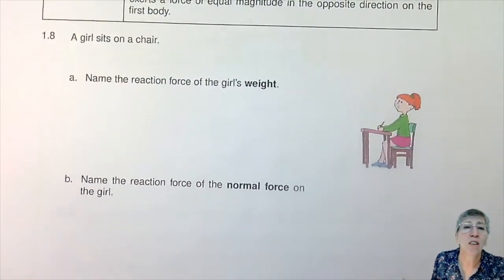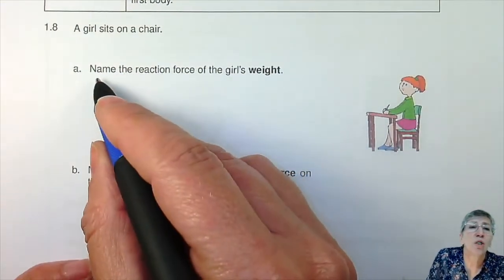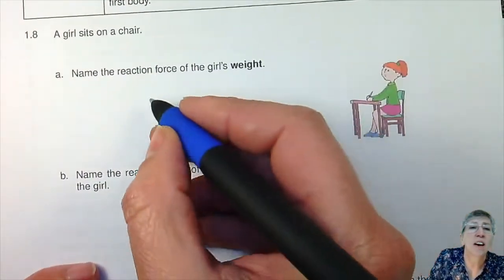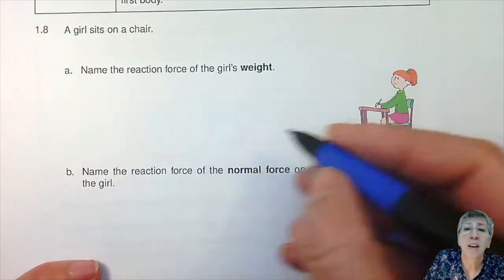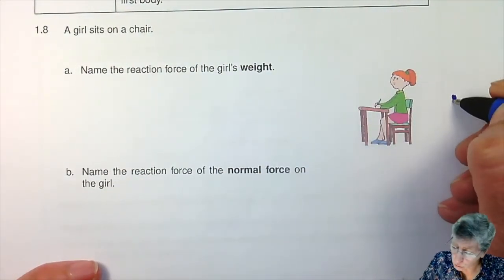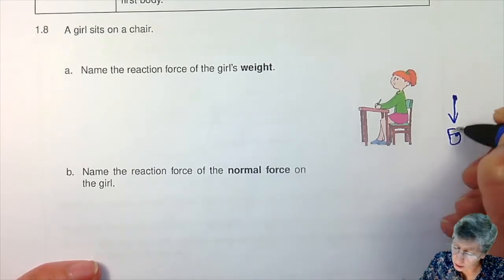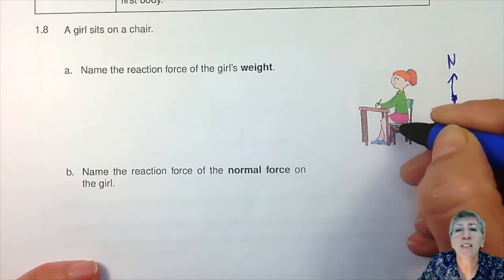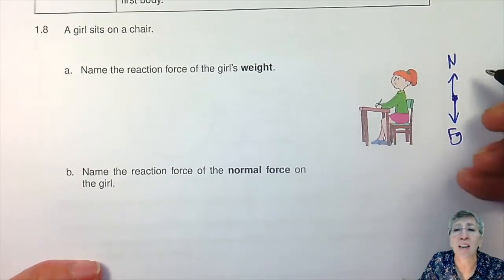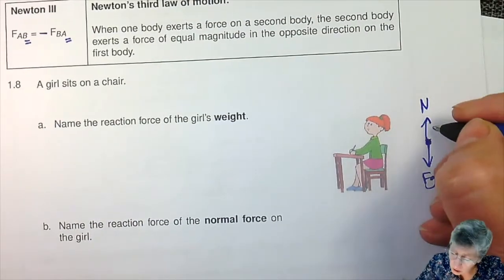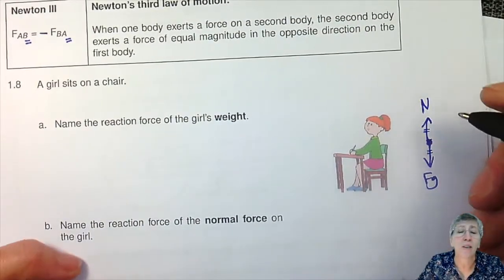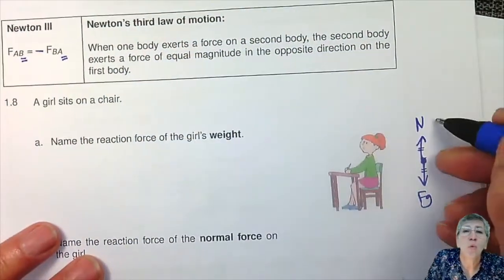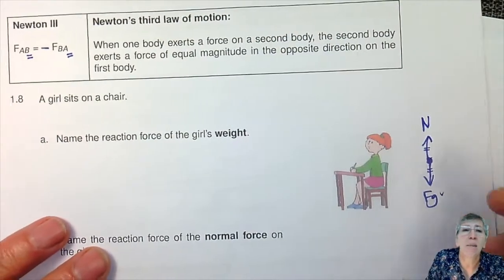We've got this girl sitting on a chair, and I ask you to name the reaction force — the action-reaction force — of the girl's weight. If you think about the forces working on this girl, you've got gravity pulling her down, the gravitational force, and then the normal force of the seat pushing her up so she doesn't sink in. They are equal because she's not going up or down. But when working with Newton's third law, that normal force and gravitational force can't be a pair.